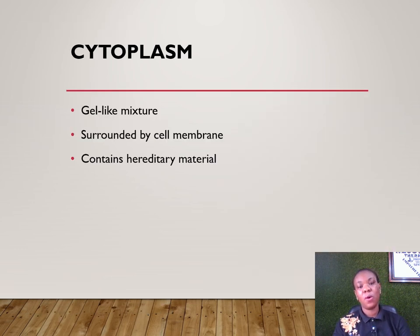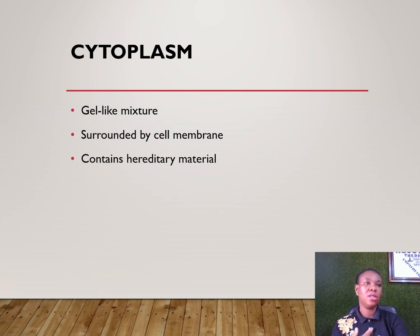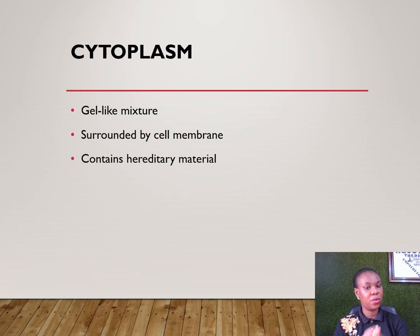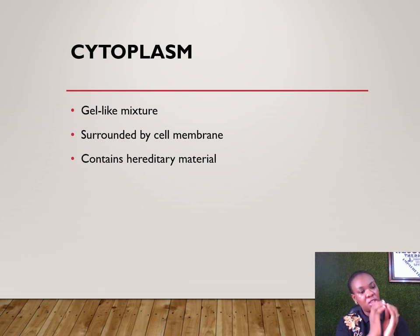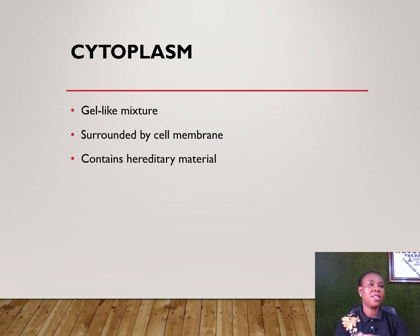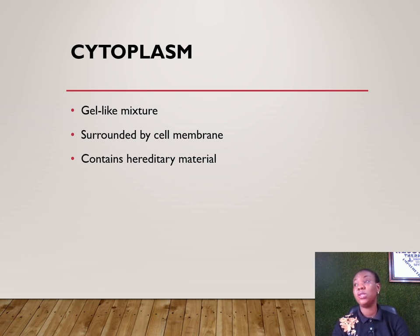The cytoplasm is like a gel within the cell membrane — it fills the inner cavity of the cell. Each cell usually contains its own cytoplasm individually, except when there is a need for cell-to-cell communication. It also contains the hereditary material of that cell.